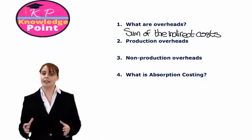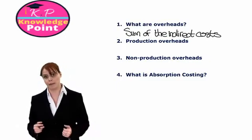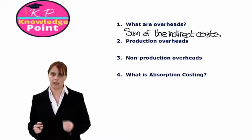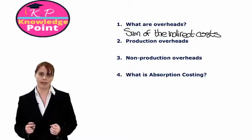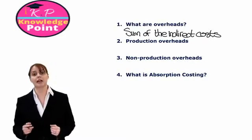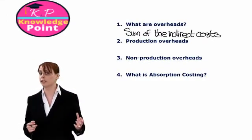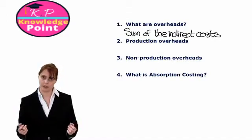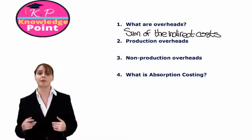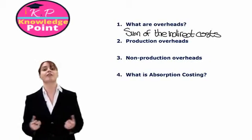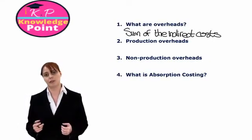And we're going to be looking at these indirect or overhead costs in some detail throughout this topic on absorption costing. Specifically, we are going to be focusing on our production overhead costs. Remember, another classification we made in relation to costs was dividing them between production and non-production costs. Our production costs are the costs we must incur in order to produce our product. So in a manufacturing company, the production costs will be the costs associated with the factory environment.